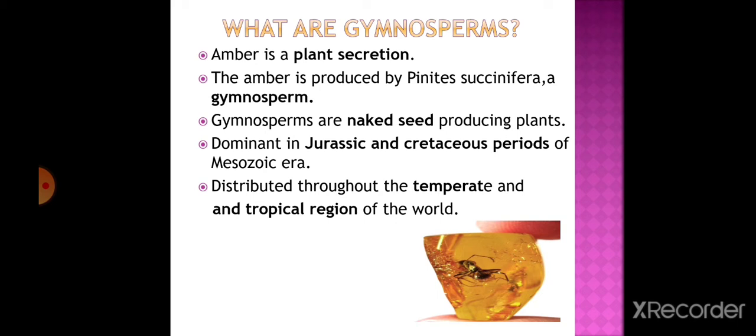In this chapter we shall discuss in detail one group of seed-producing plants called gymnosperms. Gymnosperms are naked seed-producing plants. They were dominant in the Jurassic and Cretaceous periods of the Mesozoic era. The members are distributed throughout the temperate and tropical regions of the world - that is, moderate and hot humid climates.